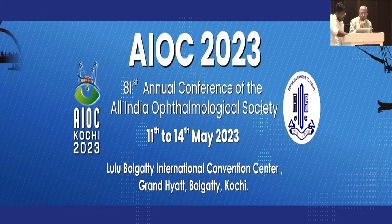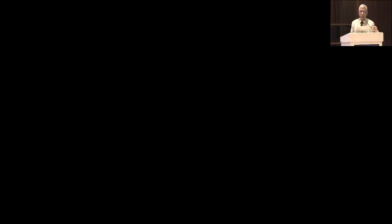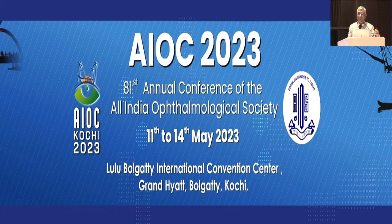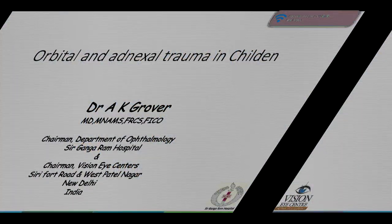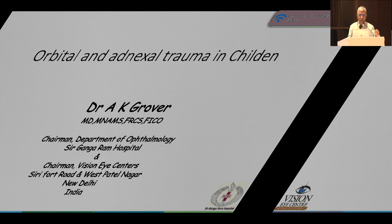Good morning and welcome to this session on pediatric trauma. Trauma in children is critically important because the morbidity leads to long-term implications for their lives. Tissues behave differently in children; issues of amblyopia, difficulty assessing visual acuity, and several other factors make pediatric ocular trauma a special problem. Today we deal with different aspects of pediatric ocular trauma; I will talk about orbital and adnexal trauma in children.